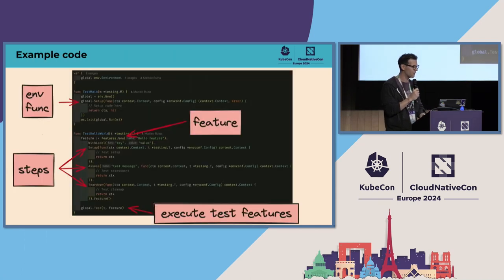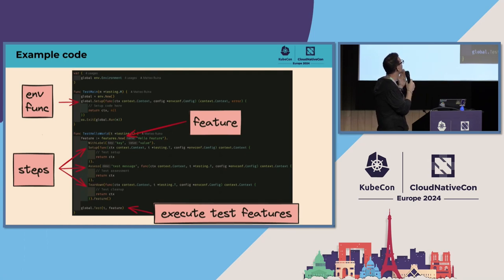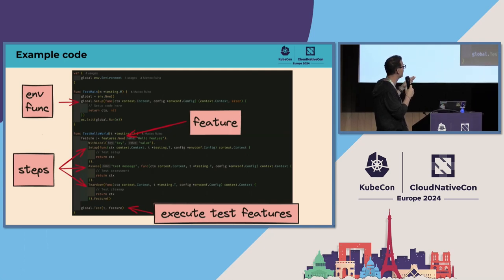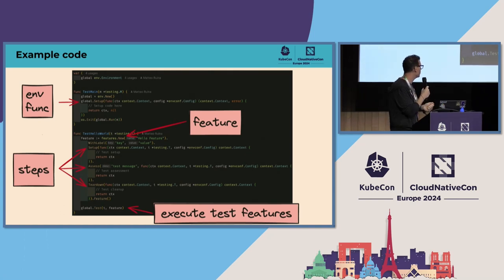Let's look at some code examples. Here you can see I'm creating a new environment in the test main, applying an environment function — in this case the setup — where you can add any code to be executed before your tests, and then running the test suite. Then I have a regular Go test, the Hello World, where I have a new feature. You can apply a name, add labels, and add steps — in this case a setup, a single assessment, and a teardown. You can have multiple setup steps, multiple assess steps, and multiple teardown steps. At the end you execute the test feature.